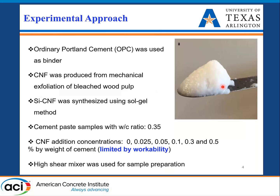This picture on the right side shows the consistency of this cellulose slurry. In this case we have 97 percent water and only three percent solid, so it is more like a gel-type material, and whenever we add it in our mixture there is a huge drop in workability. We use it up to 0.5 percent by weight of cement, and this maximum percentage was decided based on workability.